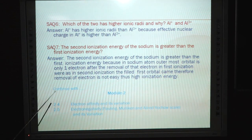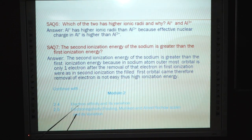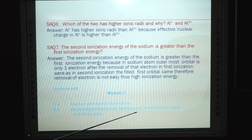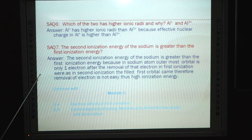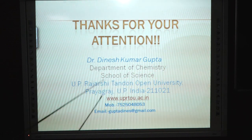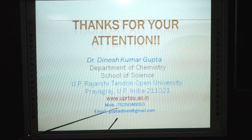We will continue with Module 2: section 2.4 Electron Affinity and Its Variation, 2.5 Electronegativity (Pauling, Mulliken, Allred-Rochow scale and its variation). Thank you for your attention. For further contact, please use the provided email or contact number.